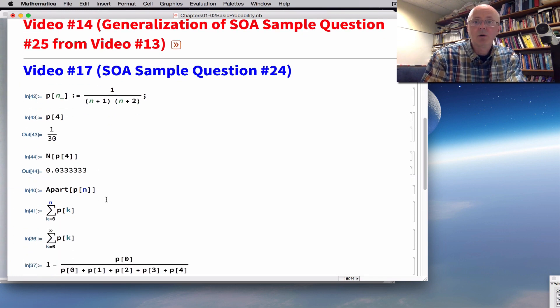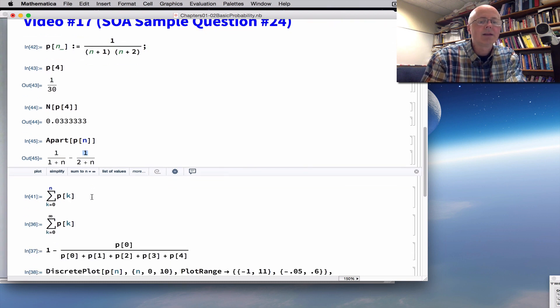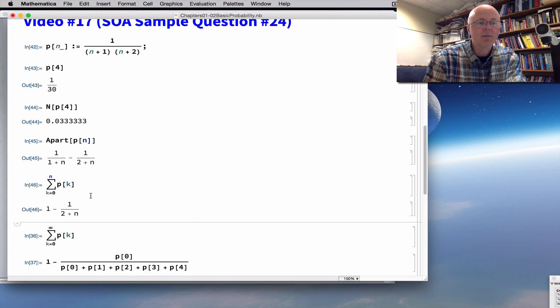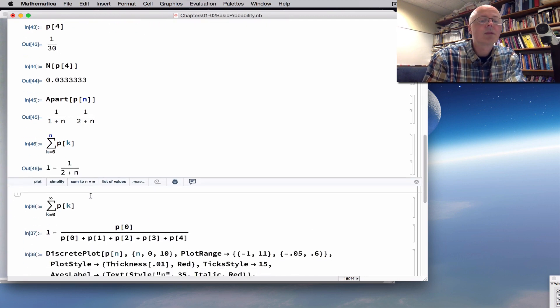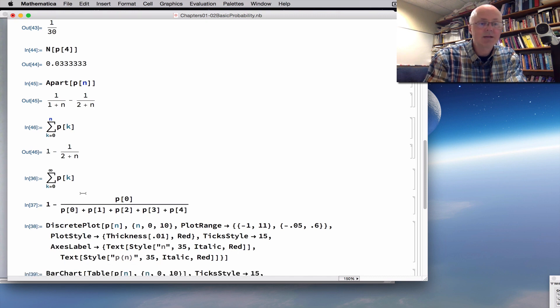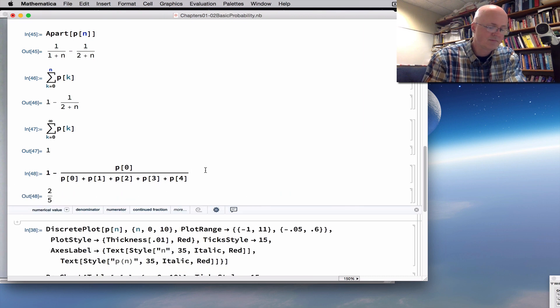A part in Mathematica will confirm our partial fraction decomposition. There's what we got when we did the partial fractions. The a is this first one, and the b is negative 1. This confirms the nth partial sum is 1 minus 1 over n plus 2. This confirms the infinite sum equals 1. And this combination confirms our answer of two-fifths, which again was choice B on the sample exam.